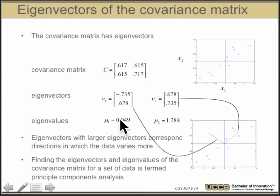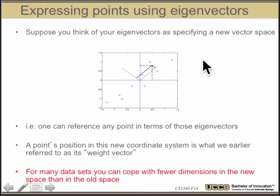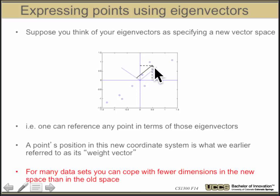Given a covariance matrix, I find its eigenvectors, and they give us the directions of maximal variance. Using eigenvalues and eigenvectors to do this is called principal component analysis. If you think of the eigenvectors as specifying a new basis in space, you can reference any point in terms of those eigenvectors. For an n-dimensional space, n eigenvectors are just a new set of bases. The point in this coordinate space is its weight vector. So if I start with 10,000 dimensions and use only 100 principal components, I reduce my 10,000-dimensional image down to 100. For many datasets, you can cope with very few dimensions compared to the original space.